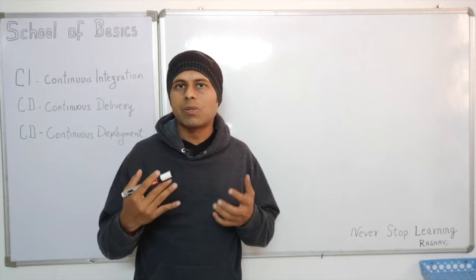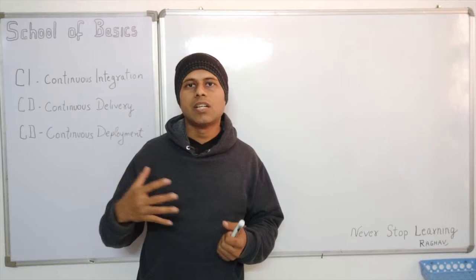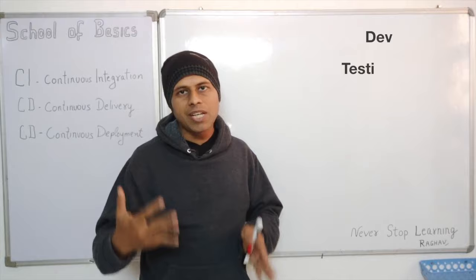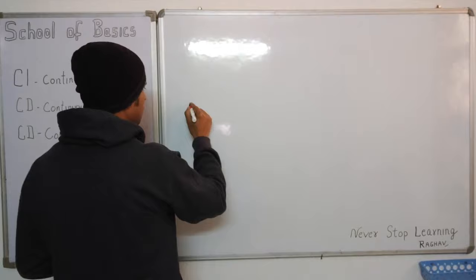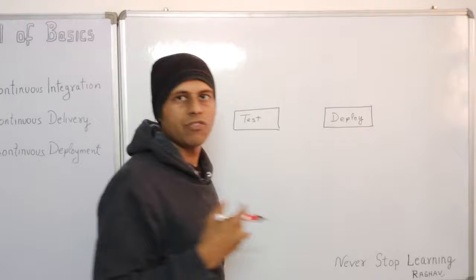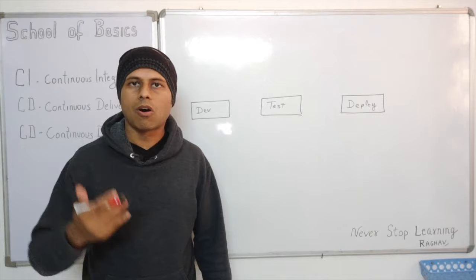In an organization, we have processes and it starts with a dev process. Any application or software project starts with a dev phase, then we have a testing phase, and then we have a deployment and release phase. Release can be a part of deployment or after deployment we do the release process.